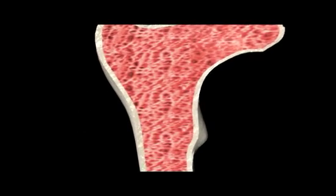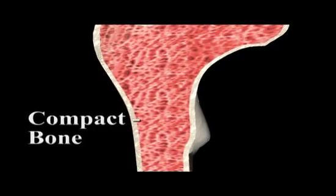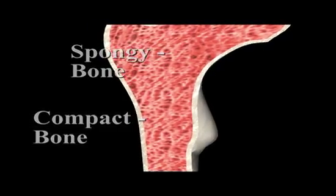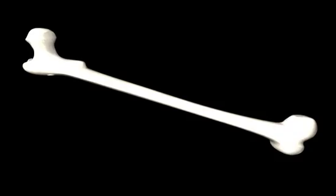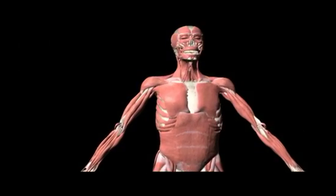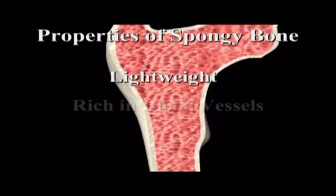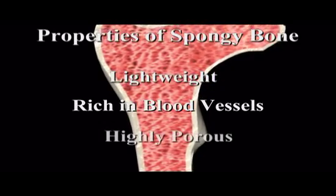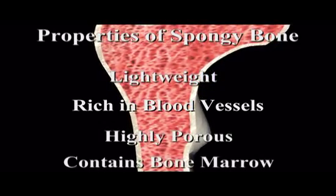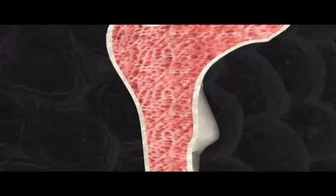Our bones consist of an outer shell of compact bone and an interior of spongy bone. Compact bone is dense and strong and provides an attachment site for muscle. Spongy bone is lightweight, rich in blood vessels, highly porous, and contains bone marrow where blood cells are formed.